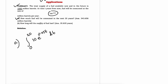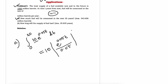10 is a constant so you can put it outside the integration. The integration of e to the power 0.05t is e to the power 0.05t divided by the derivative of that power, which is 0.05. You need to evaluate this between the upper limit and lower limit.